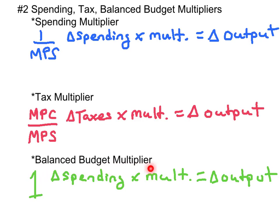We use the balanced budget multiplier whenever there's an equal increase in taxes and spending at the same time — that is, when the government is operating from a balanced budget. You take the change in spending, multiply it by the balanced budget multiplier, and you get your change in output. The balanced budget multiplier is always equal to 1, so the change in output will equal the change in spending. This is because the spending multiplier is stronger than the tax multiplier.